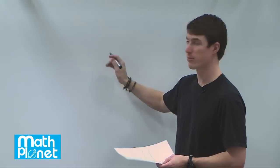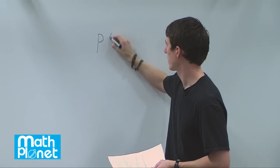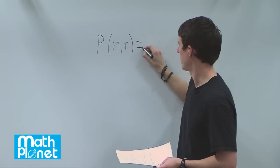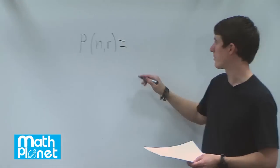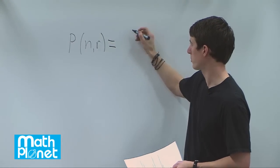So to find that, it's a fairly straightforward formula. We have the permutations of n and r is given as the following. We have the number of total possible chairs, the total possible options,